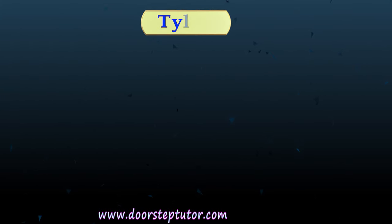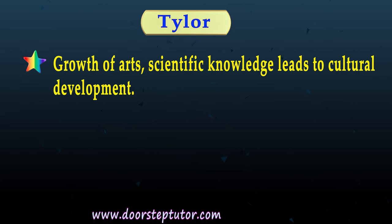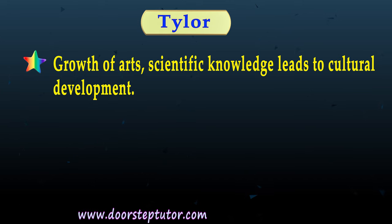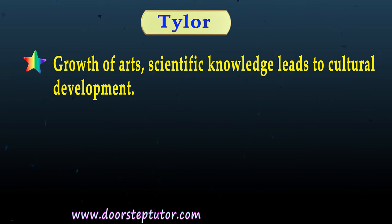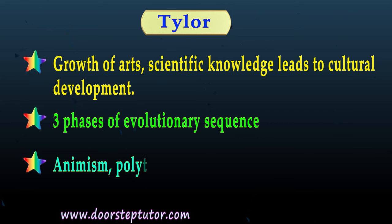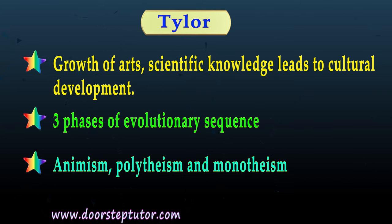Tyler said that cultural development is because of the growth of arts, scientific knowledge, etc. that took place in society, and this led to cultural development because deep-rooted ideas started to change with scientific knowledge and scientific temperament. He talked about three phases of evolutionary sequence: animism — belief in spirit; polytheism — belief in several gods; and monotheism — belief in one god.